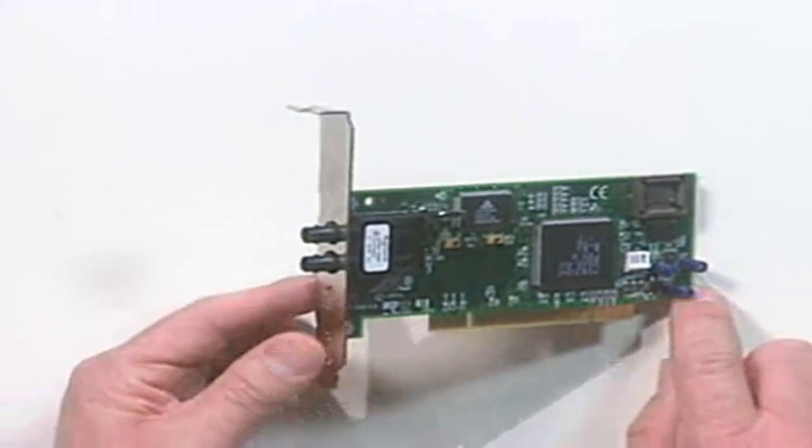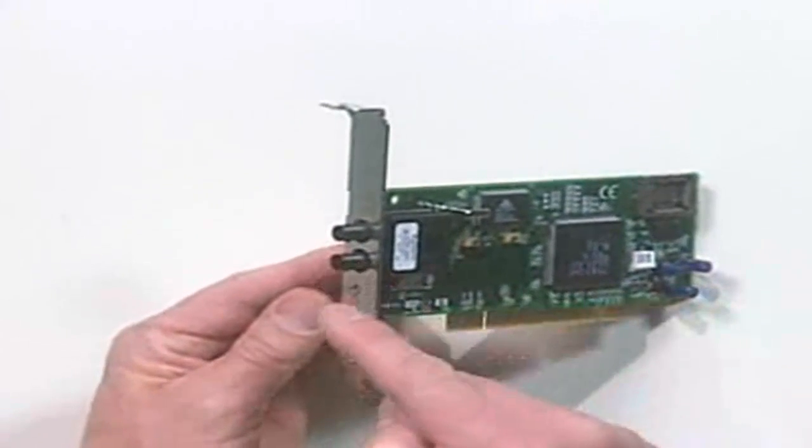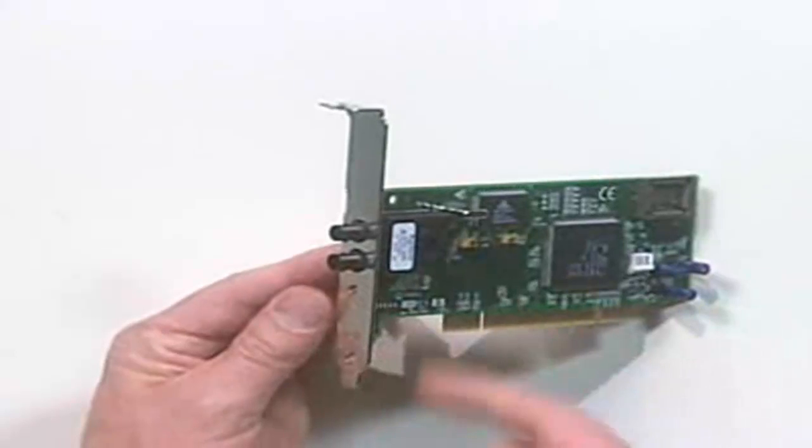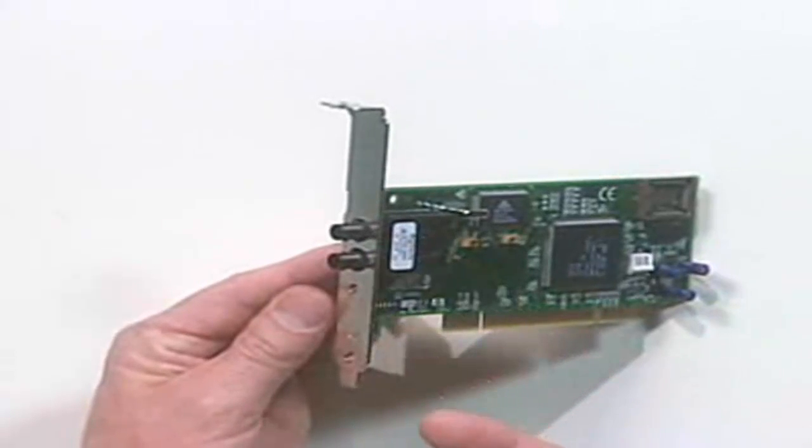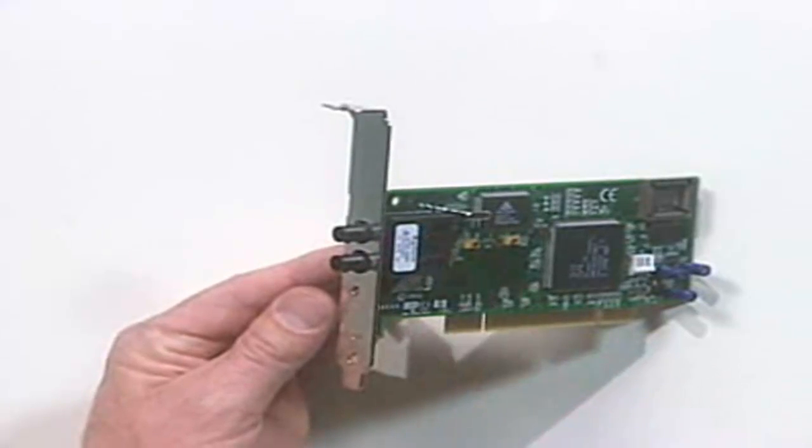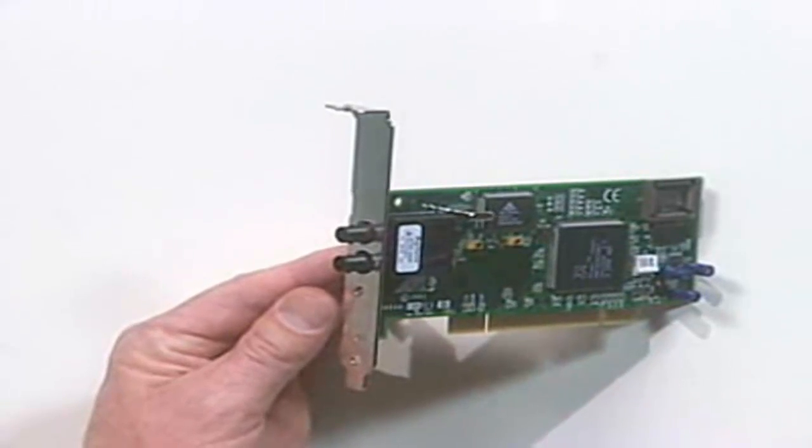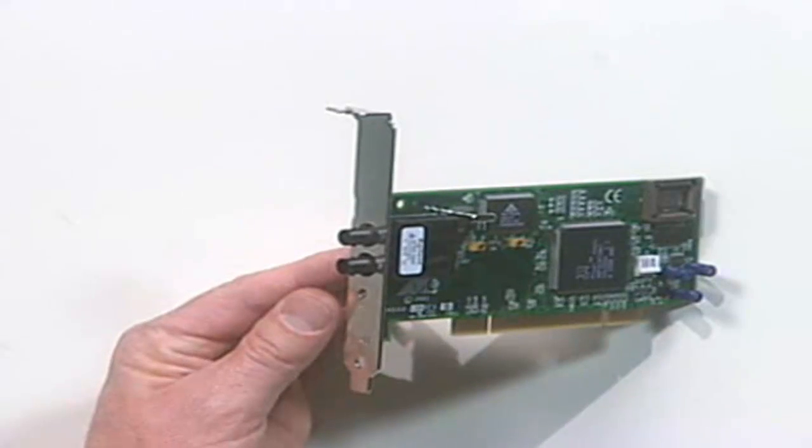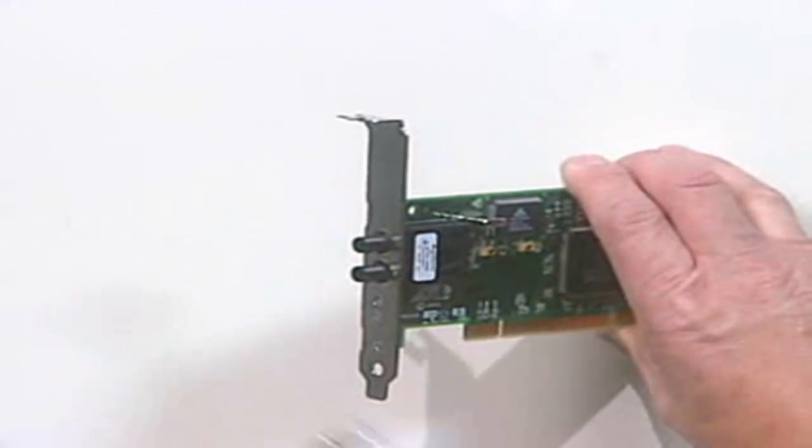Now, as you can see, the connector on this fiber-optic network interface card is slightly different. Instead of having an RJ-45 connector or a BNC connector, there's just two plugs. This one's transmit, this one's receive. Instead of using copper wiring, the fiber-optic network interface card uses fiber-optic media, which looks like this.